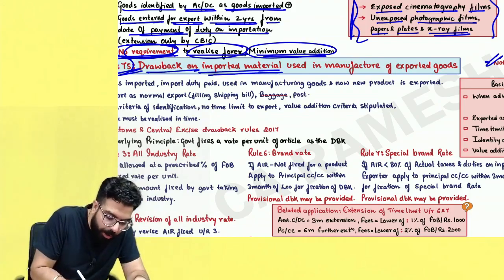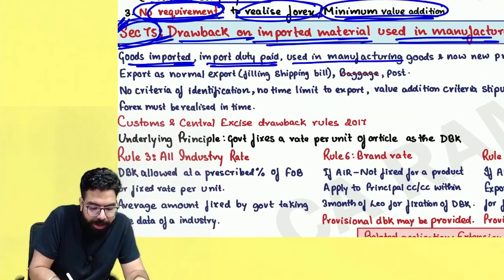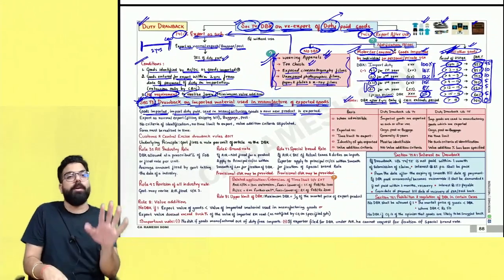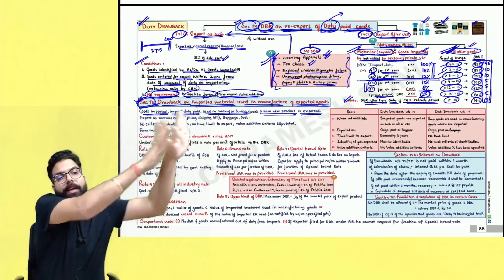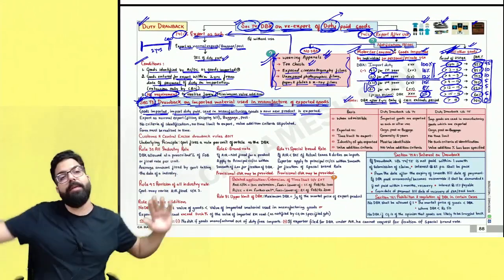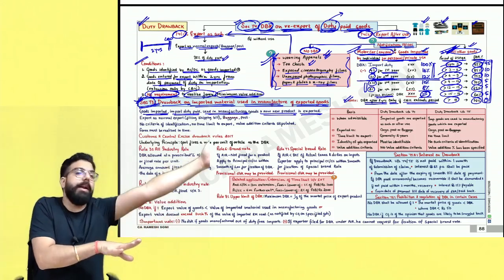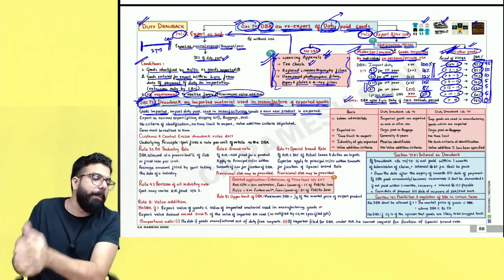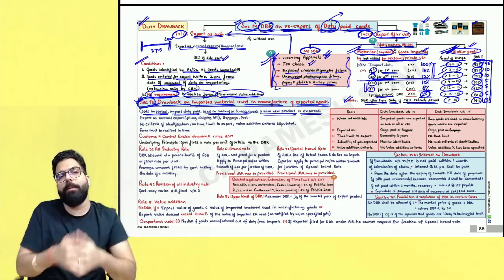Section 74 is for traders who imported something and sold the same goods outside India — no value addition done in India. Section 75 is for manufacturers who bought raw material, cleared it in India, made the final product, and exported it. The duties paid on material used in manufacturing the final product are given as duty drawback under section 75. Government fixes an all industry rate rather than determining duty drawback individually for each exporter.